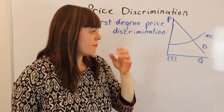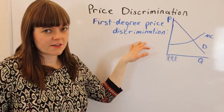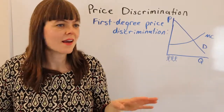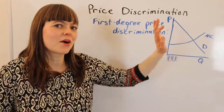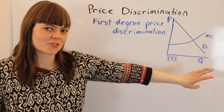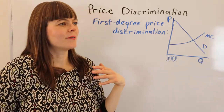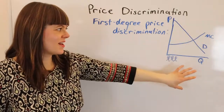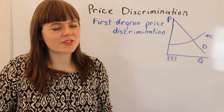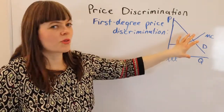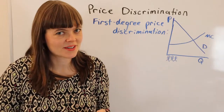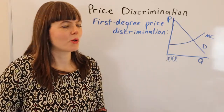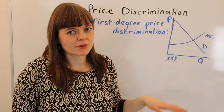So perfect price discrimination — first degree price discrimination — is basically not a real thing, but you can model it on a graph. Economists use it as a concept to explore the maximum amount that companies could elicit from people, and this is that maximum.